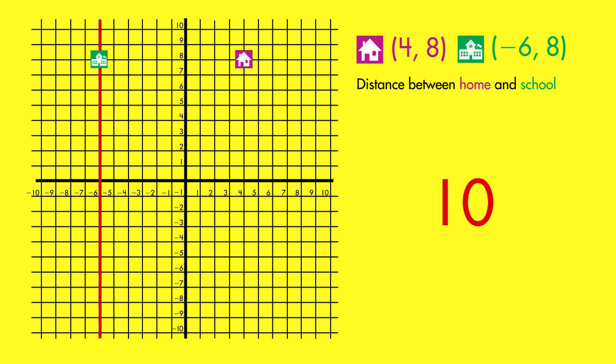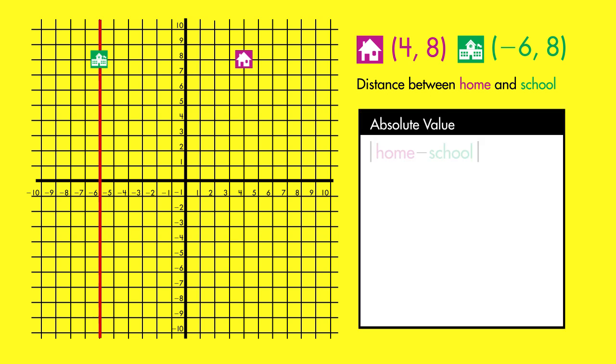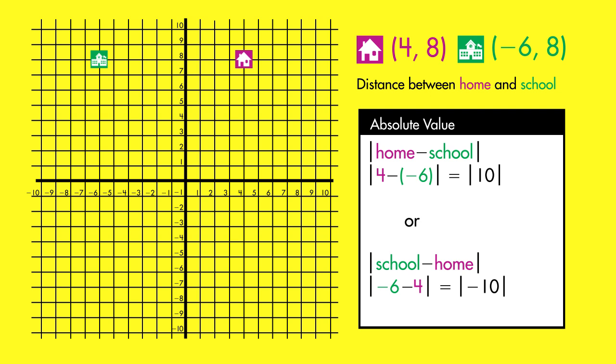Counting the units is the same as finding the absolute value of the difference between the coordinates. That's because no matter which location we start from, the distance between the locations is the same. We use the absolute value because a negative number does not accurately describe the distance. We know the two places are 10 units apart.